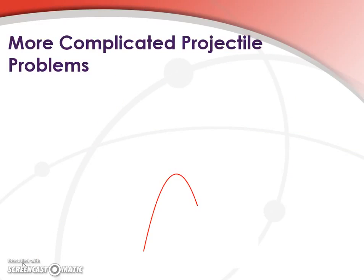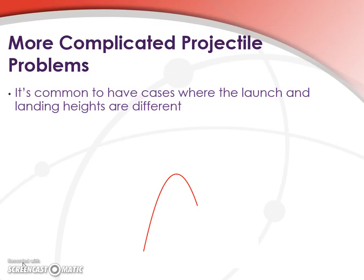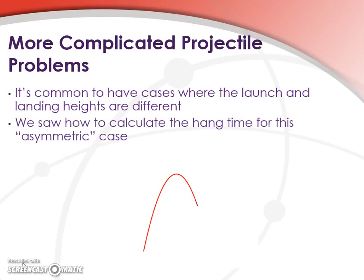We've seen the first of our more complicated projectile problems. We're going to look at another one today. As we've discussed, it's common to have cases where the launch and landing heights are different for our projectiles. We saw how to calculate the hang time for this asymmetric case yesterday. Today we're going to see how to get the impact velocity.